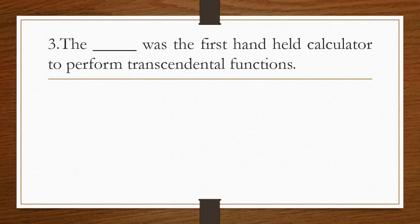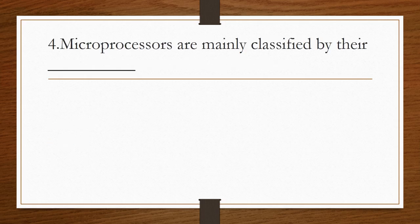The blank was the first handheld calculator to perform transcendental functions. Answer is HP35. Microprocessors are mainly classified by their blank. Answer is word size. Depending upon the word size, the microprocessors will be classified.